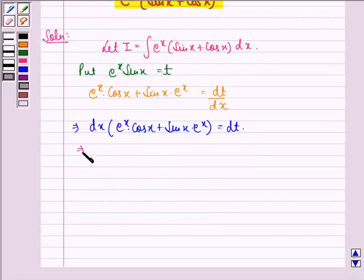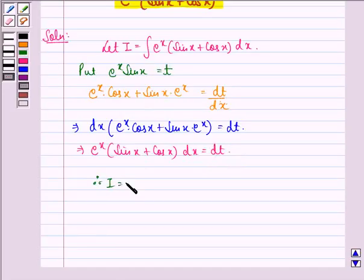This implies that e^x(sin x + cos x)dx = dt. Therefore, I can be written as integral of dt. Integral of dt will be equal to t + C, and t was equal to e^x sin x. So the answer is e^x sin x + C.